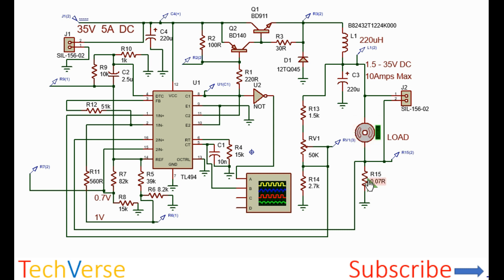This is the current sensing resistor. I've chosen it such that when there is a potential drop of 0.7 volts, current limiting will occur. This is the voltage input from the output side. You can adjust the output using this potentiometer. I've selected the components to ensure that the voltage can be adjusted from about 1.5 volts up to 35 volts.